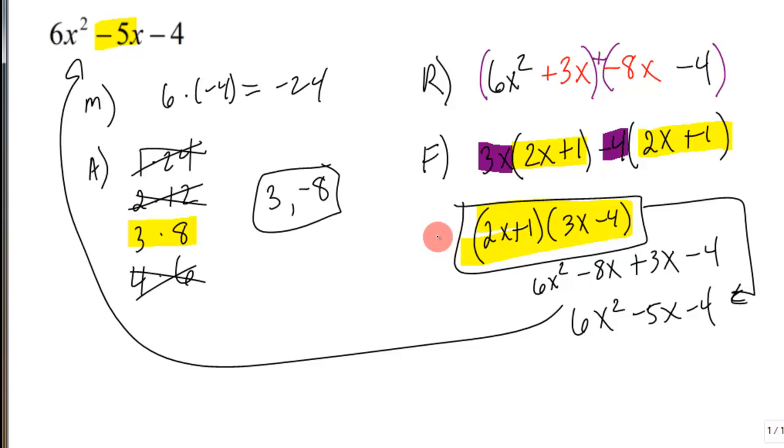Now that follows the MARF process. Works for any trinomial actually. But if you have something you can't factor out, you always factor first. But if you can't factor anything out, the leading coefficient is not 1, then I would suggest working through with MARF.